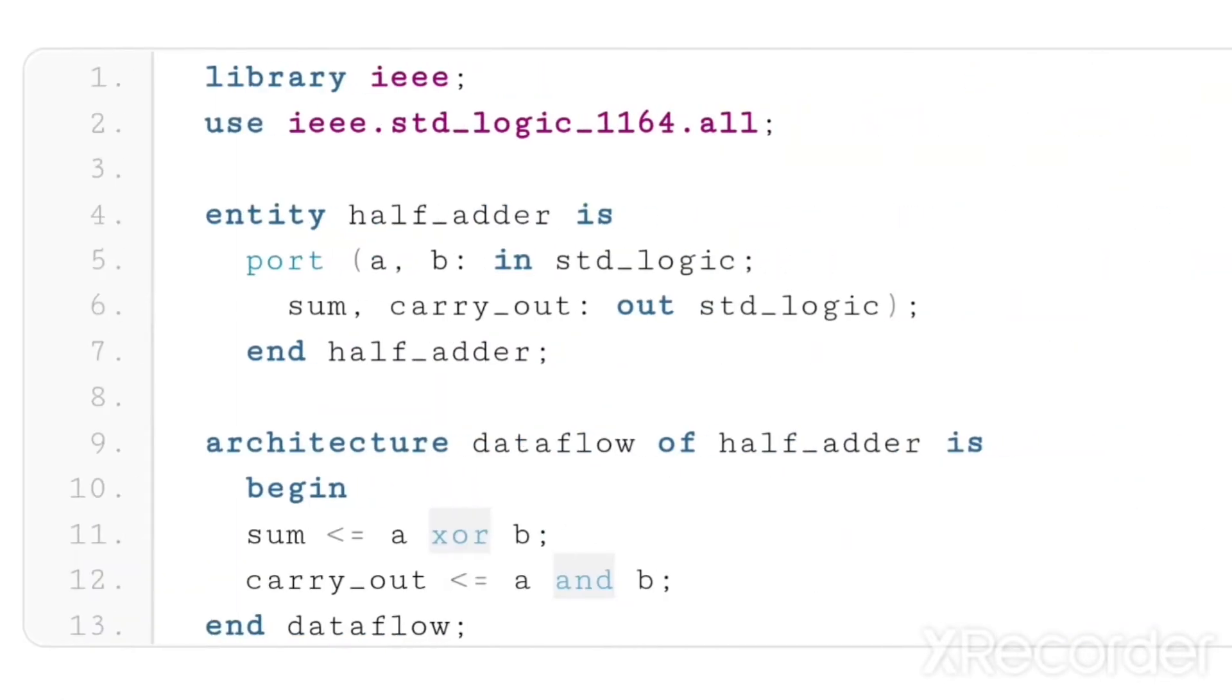In VHDL, we have two blocks: an entity block and an architecture block. What we're going to write in entity and what we're going to write in architecture, we need to understand first.